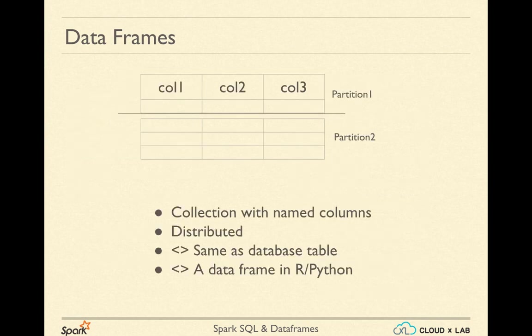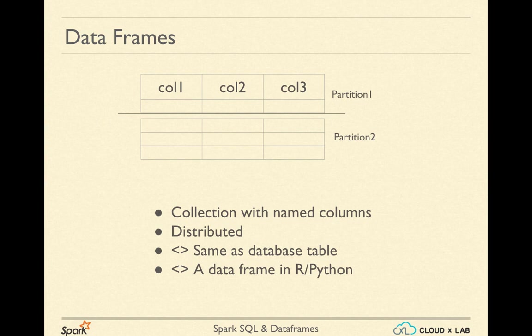A DataFrame is a collection of data organized into named columns, meaning it has columns and each column carries a name. This DataFrame is distributed because under the hood it is an RDD, so it also has partitions. Each partition has a subset of rows and partitions can be located on multiple machines. The whole record or row will not be split across machines. The concept is very similar to DataFrames in R or DataFrames in the pandas library of Python.